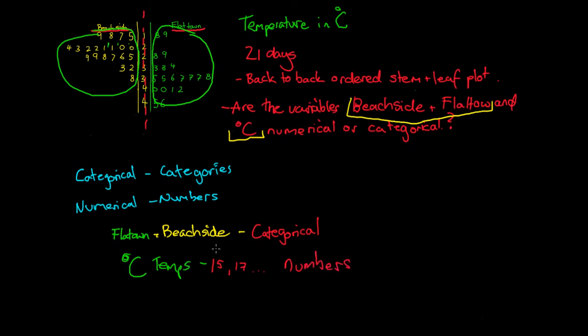So because we see that the temperature is numbers, we would say that it's numerical data. So if we were asked to answer this question, we'd say that Beachside and Flat Town were categorical and the temperatures in degrees Celsius was numerical data.